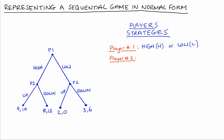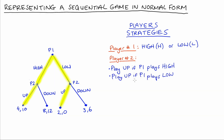Any single strategy for Player 2 will describe their plan of action both if Player 1 goes high and if Player 1 plays low. For instance, Player 2 can play up if Player 1 plays high — but this alone is not a complete strategy, because we also need to describe what Player 2 will do if Player 1 plays low. If we add that Player 2 also plays up if Player 1 plays low, these two statements together count as one strategy, which I'll call UU: up if Player 1 plays high, and up if Player 1 plays low.